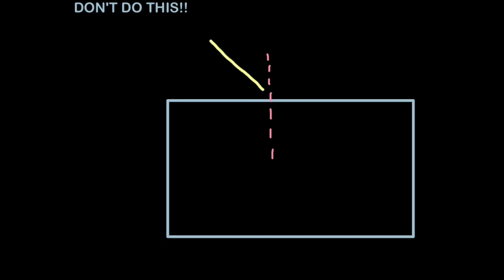Sometimes people draw the light and bend it, but they bend it too much so it actually goes along with the normal. That's wrong as well. Don't do that. It doesn't bend so much that it actually matches the normal. It just bends towards the normal.